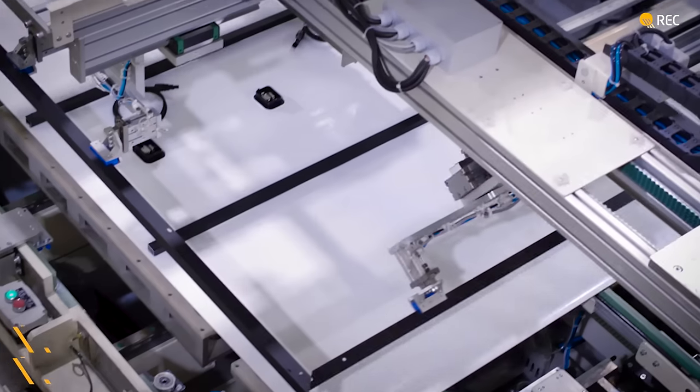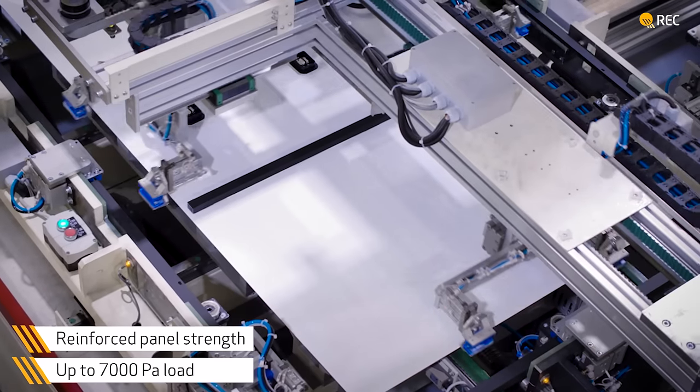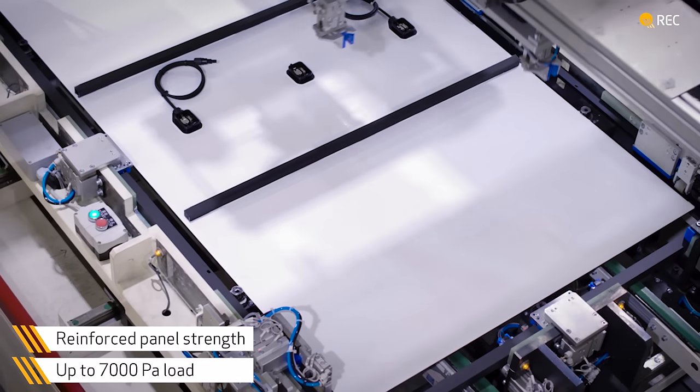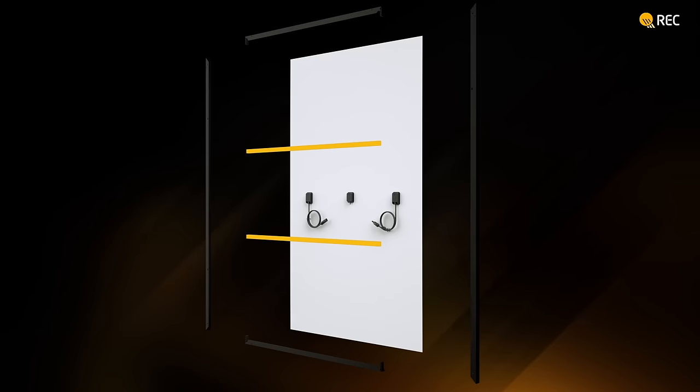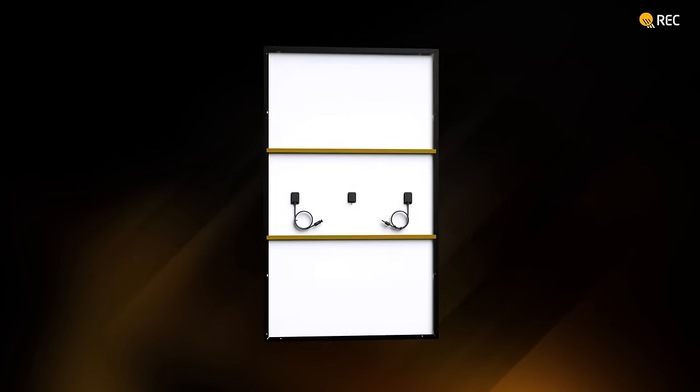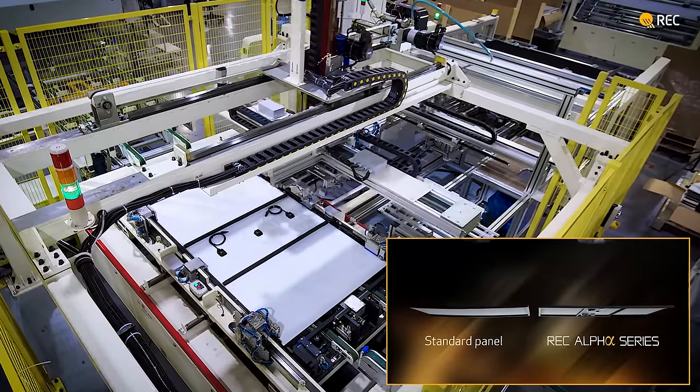Even the frame used by REC is an innovative development where two support bars on the rear prevent the panel from bending as much under load such as snow or wind. This helps it maintain its high power over its warranted lifetime and deliver on REC's promise to customers.